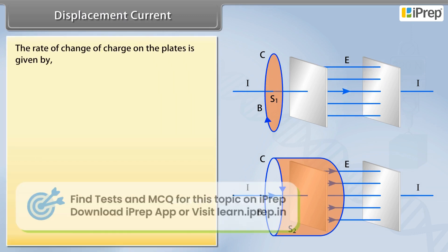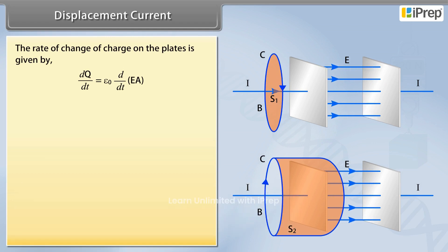The rate of change of charge on the plates is given by Epsilon naught D upon DT of EA which is equal to Epsilon naught D phi E by DT. Hence, the displacement current is given by ID is equal to Epsilon naught D phi E by DT.